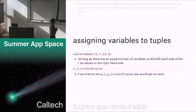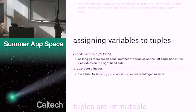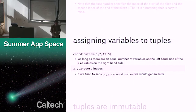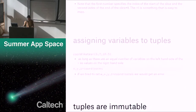Once we have a tuple like coordinates, we can assign individual variables to it — an easy way to assign a lot of variables at once — as long as there are an equal number of variables on the left-hand side as values on the right-hand side. So coordinates has three items and we have three variables: x, y, z. If we tried to set w, x, y, z (four things) equal to coordinates which only has three things, we would get an error. It has to be exactly the same number.